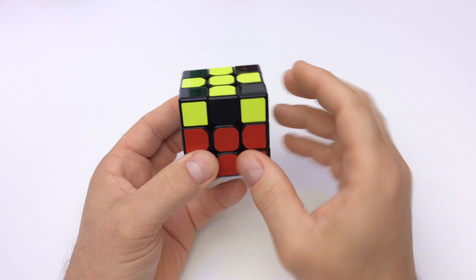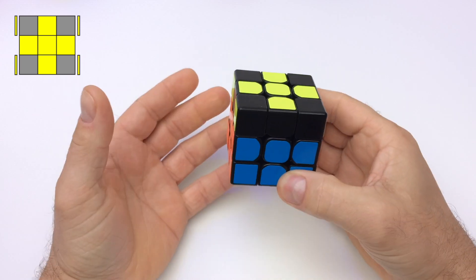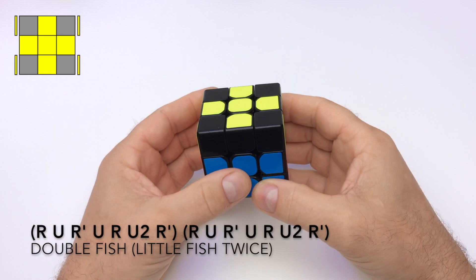To solve double fish place the yellow corners on the left and the right sides and perform little fish twice hence the name double fish.